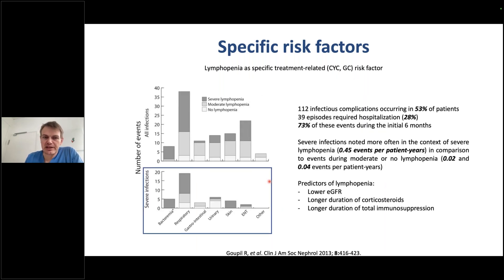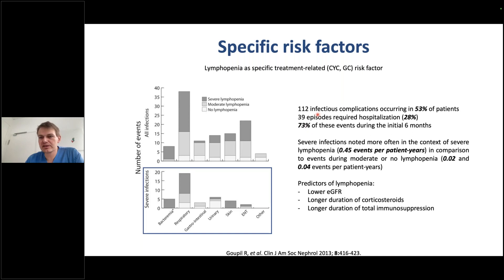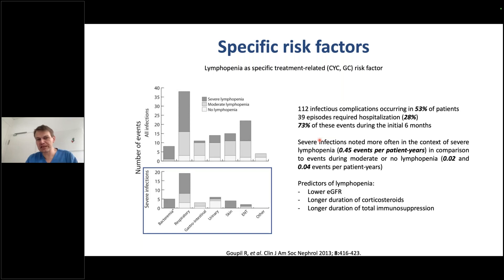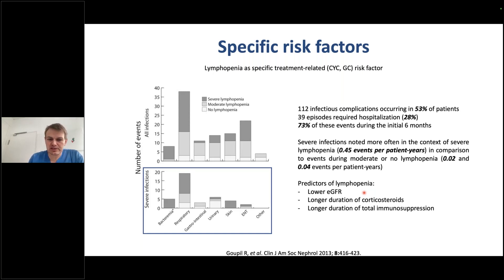It's also important to know that steroids deplete lymphocytes. A study from Canada looked at lymphopenia as a specific treatment-related risk factor — glucocorticoids are lymphopenic, and cyclophosphamide can do that too. They recorded 112 infectious complications in 53% of patients, most occurring during the most aggressive treatment phase. Patients with severe lymphopenia had the highest infection event rate, compared to those with no lymphopenia where the event rate was pretty low. Predictors of lymphopenia included low eGFR, longer duration of steroids, and longer duration of total immunosuppression.